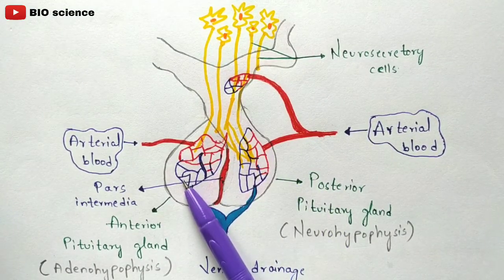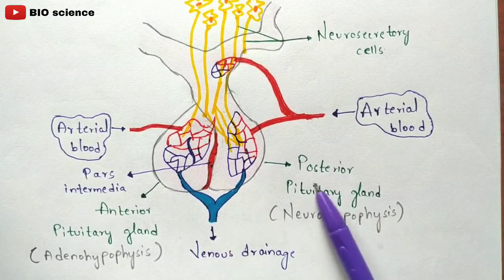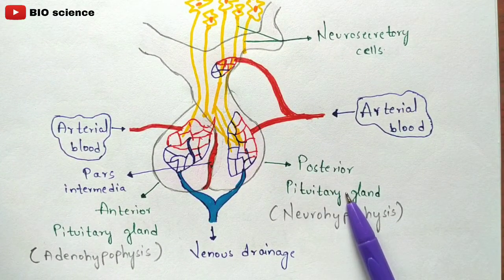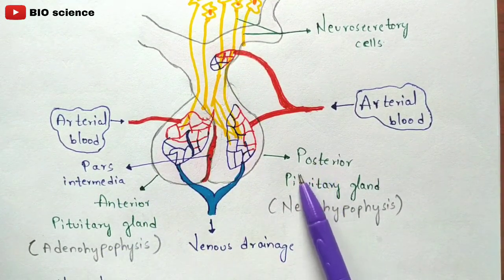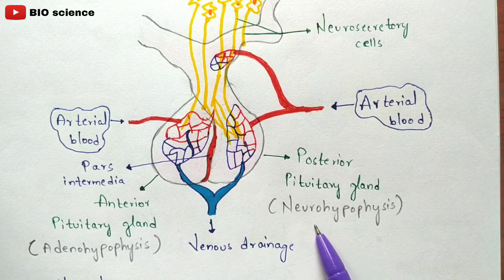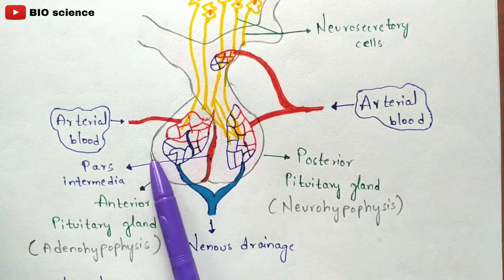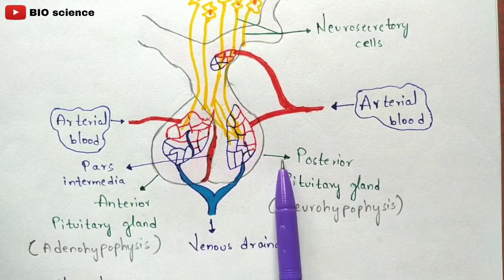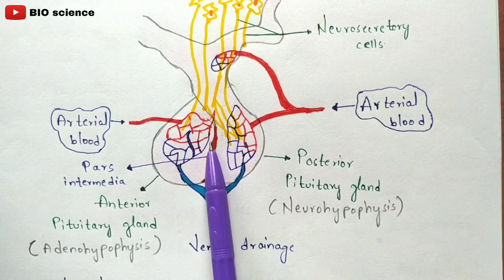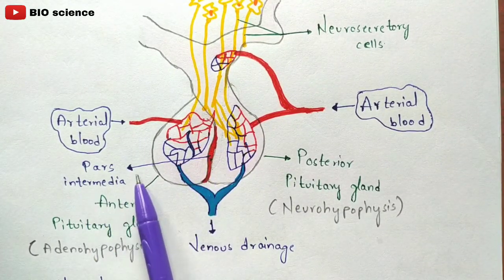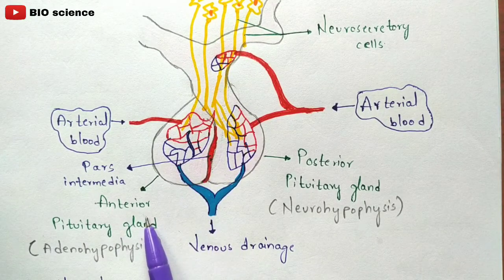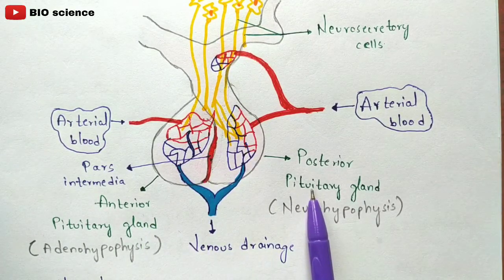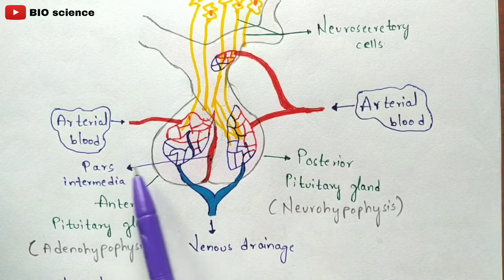The anterior lobe is called the anterior pituitary gland and the posterior lobe is called the posterior pituitary gland. The anterior pituitary gland is also called adenohypophysis, and the posterior pituitary gland is also called neurohypophysis. Both the anterior and posterior pituitary glands are separated by the pars intermedia.